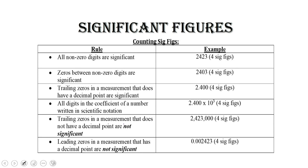Let's say you were to put a dollar bill on a balance. A dollar bill is about a gram. Depending on what balance you put it on, one balance may read 1.0, one balance may read 0.97, another balance might read 0.965 — all of those have a different set of precision. Each one, if you rounded it up, would be one gram. So significant figures takes into account how many decimal places your instrument can read to. You always take one extra digit.